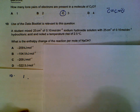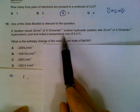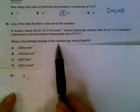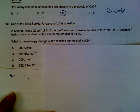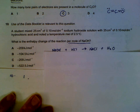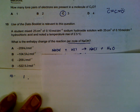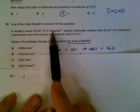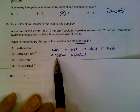Number 10: sodium hydroxide and hydrochloric acid mix and there was a temperature rise of 2.5 degrees. What is the enthalpy change of this reaction per mole of sodium hydroxide? First, write out the equation: sodium hydroxide plus hydrochloric acid gives salt and water. To find the number of moles, take the volume in dm³ — 25 divided by 1000 — multiplied by concentration. That gives the number of moles for sodium hydroxide.